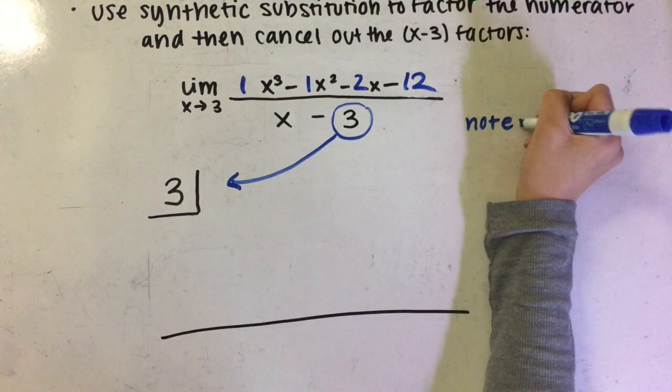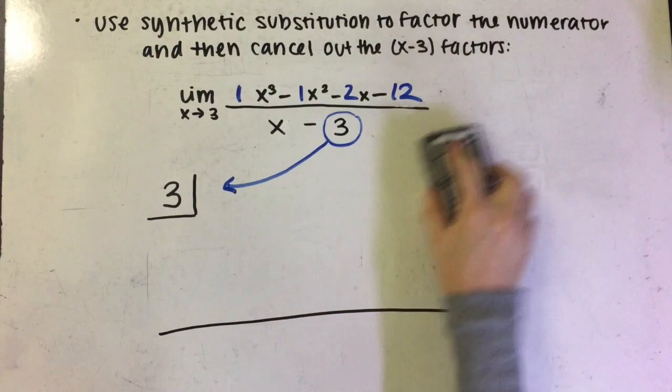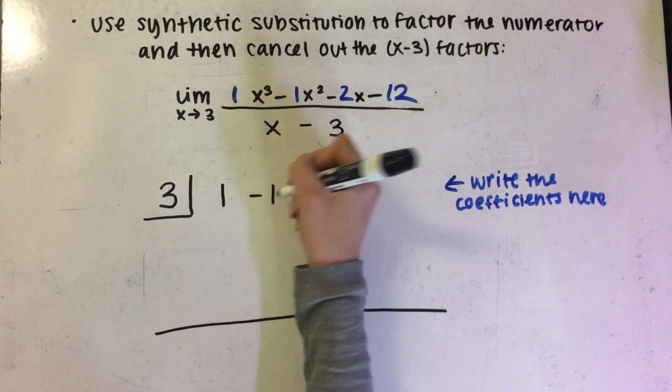Take note that if the number is subtracted, like x minus 3, then the number in the box is positive. And if the number is being added, for example x plus 3, then the number in the box will be negative. After this, we write out the coefficients of the function in the numerator. In this case, it will be 1, negative 1, negative 2, and negative 12.